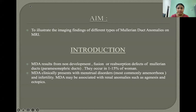The aim is to illustrate the imaging findings of different types of Mullerian duct anomalies on MRI. Mullerian duct anomalies result from non-development, fusion, or resorption defects of Mullerian ducts, also known as the paramesonephric ducts.